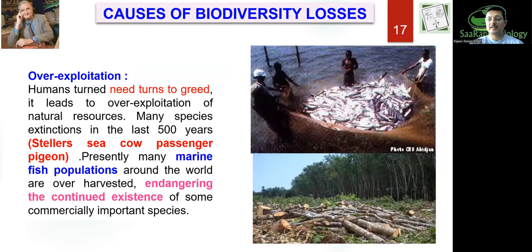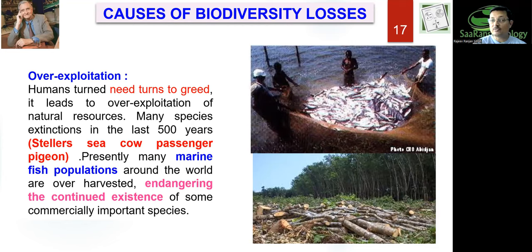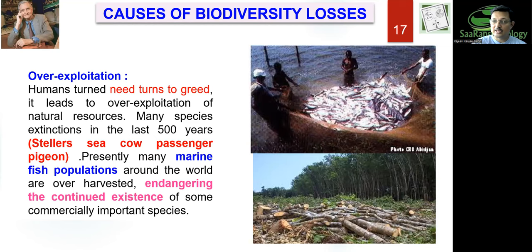Over-exploitation: we are forgetting the difference between need and greed. Over-exploitation of natural resources has led to extinction of species like the Steller's sea cow and the passenger pigeon within the last 500 years. Marine fish populations are also affected — large fishing vessels capture fish at a rate faster than their breeding rate, leading to many species getting decimated.